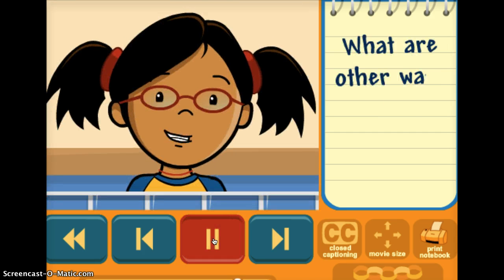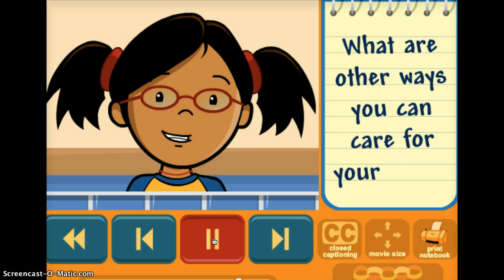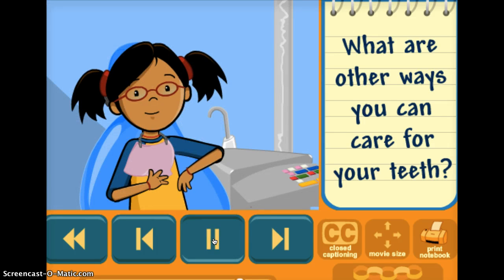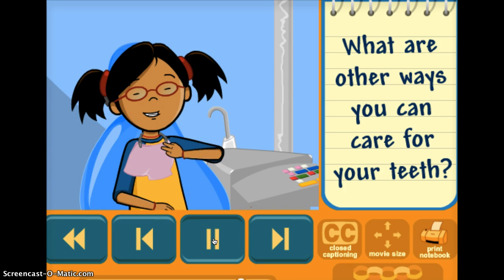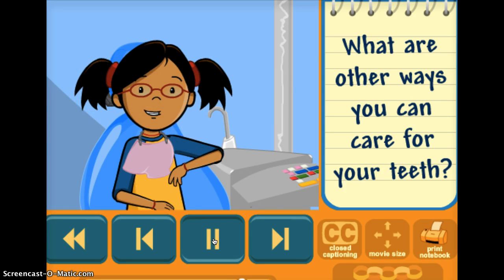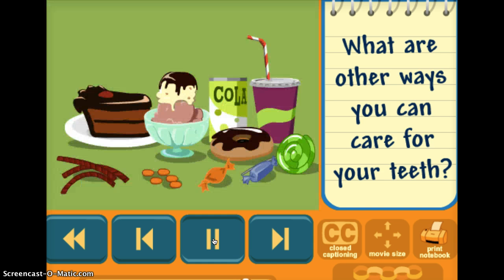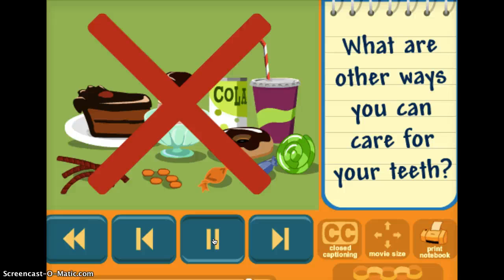What are other ways you can care for your teeth? It's important to go to the dentist twice a year. The dentist will check your teeth closely and look for cavities and other problems. You can care for your teeth by avoiding sugary drinks and foods. Sugar helps plaque grow and can cause cavities to form faster.